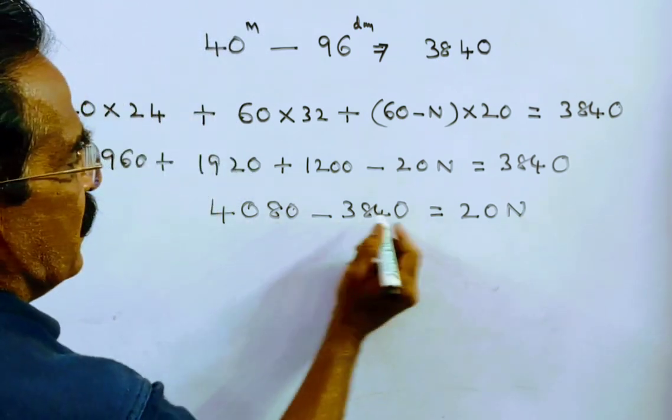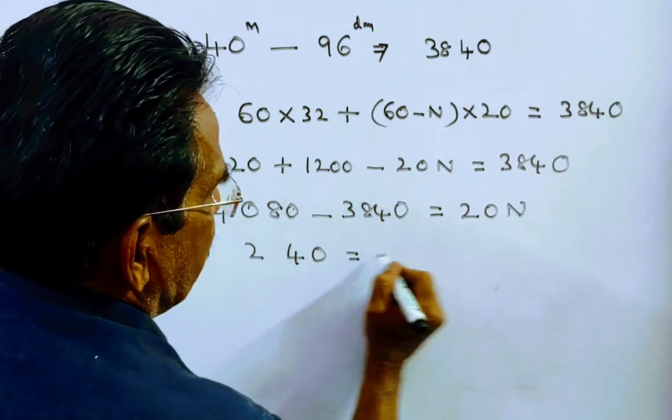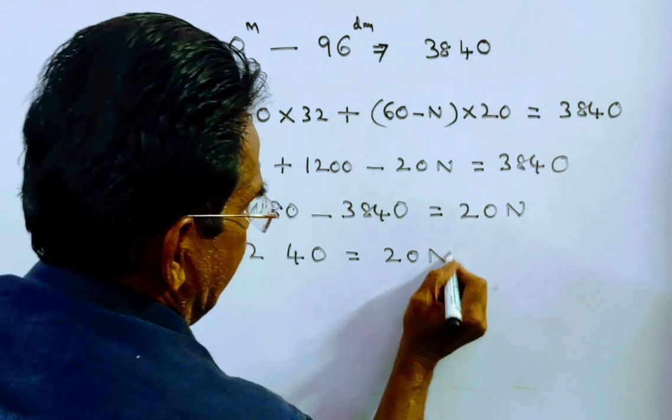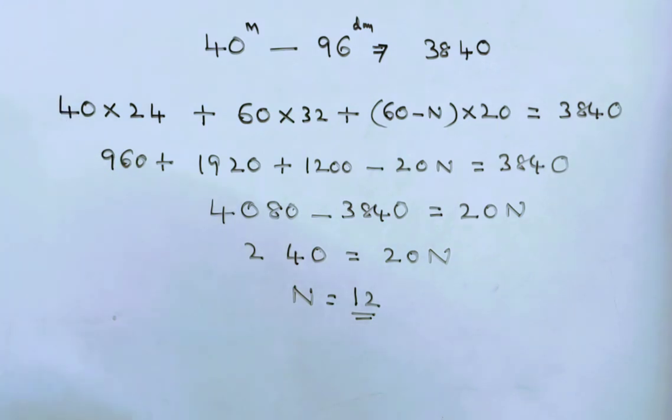So 240 is equal to 20n. N is equal to 12 friends. N is equal to 12. Thank you.